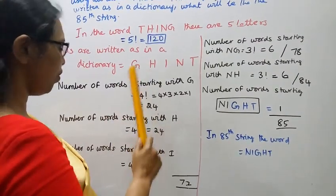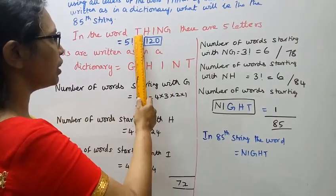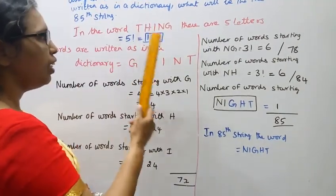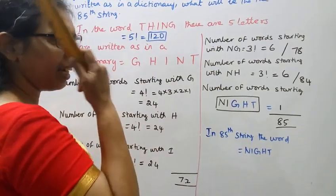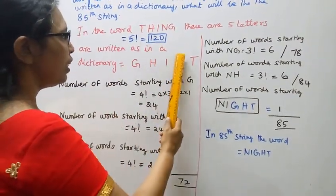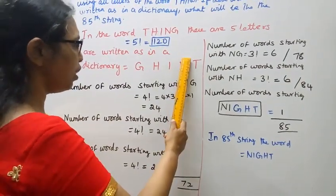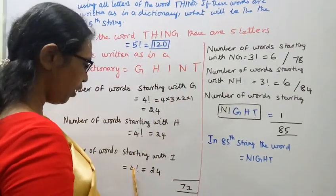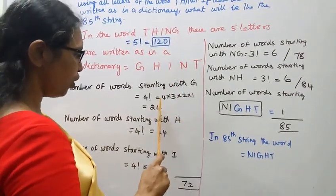Number of words starting with N: another 4 factorial equals 24. So 24, 24, 24.